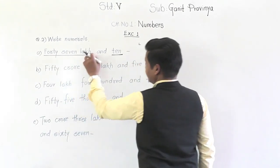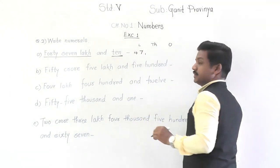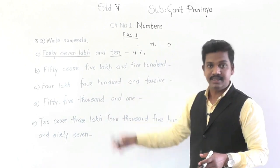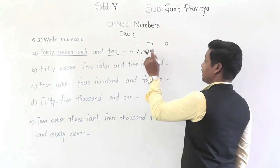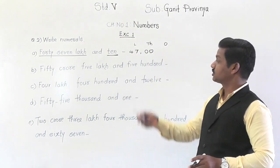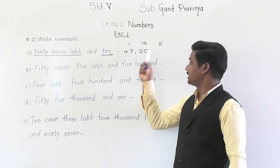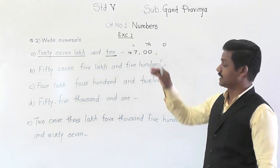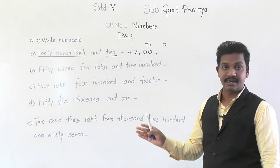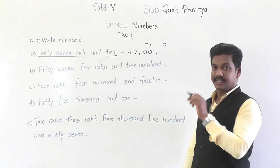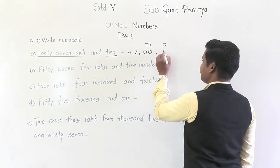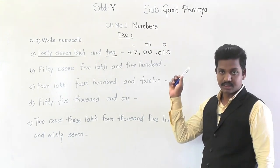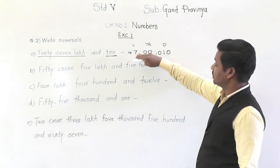In the lakh group there is 47 — write 47 and put a comma. Then in the thousands group — as there is no thousands group given, there are zero thousands. Since the thousands group has two places (thousands and ten thousands), write 00. Now in the ones group there is 10. But the ones group has three places: ones, tens, and hundreds. So for the hundreds place, write a zero: 010. So this is the numeral for 47 lakh and 10: 47,00,010.